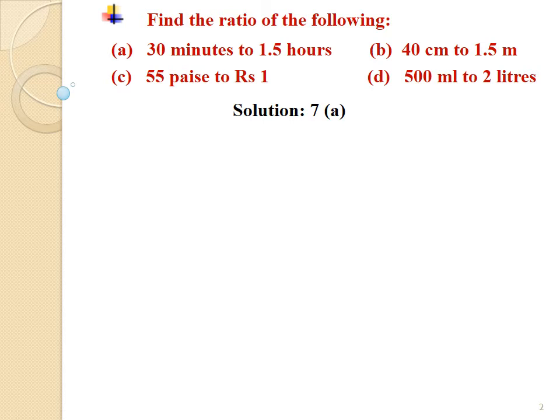Students, we will convert the bigger unit into the smaller unit. And we know that when we convert the bigger unit into smaller unit, then we multiply. So now let us solve sum number 7 and find out the ratios after converting the bigger unit into smaller unit.